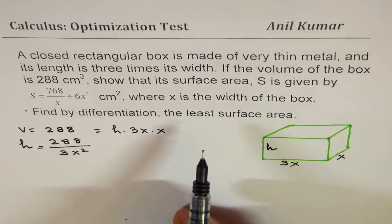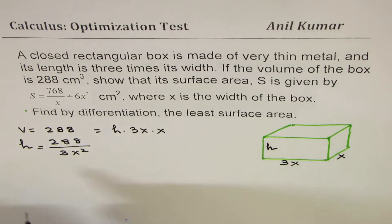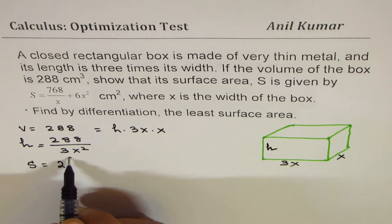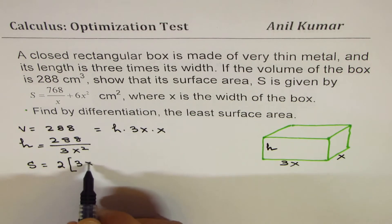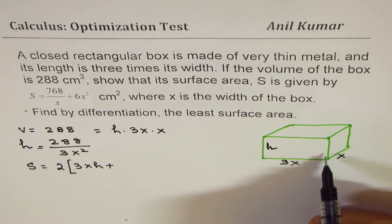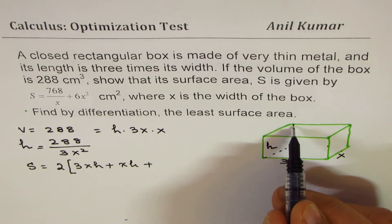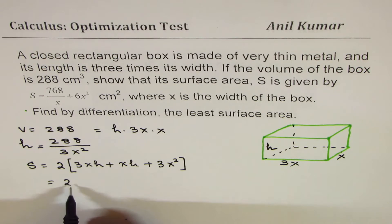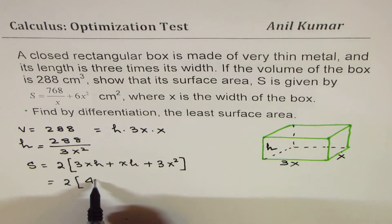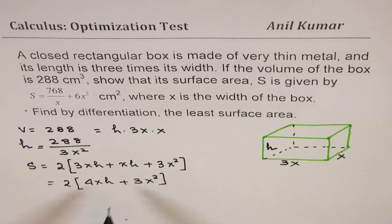Now we want to find an expression for surface area. It has six surfaces — front, back, sides, top and bottom. Surface area S equals twice the sum of three surfaces: the front is 3xh, the side is xh, and the bottom is 3x². So we have S = 2(3xh + xh + 3x²) = 2(4xh + 3x²).